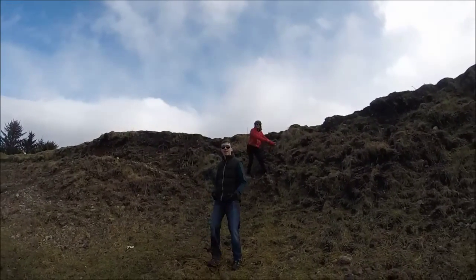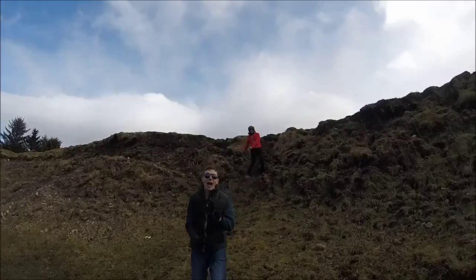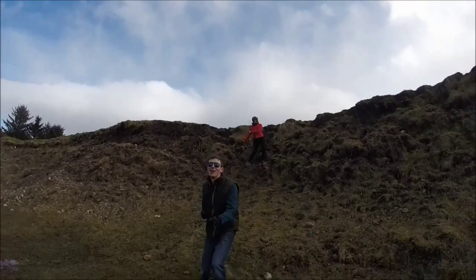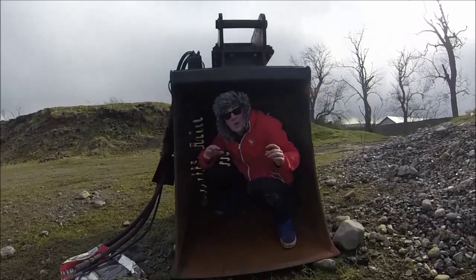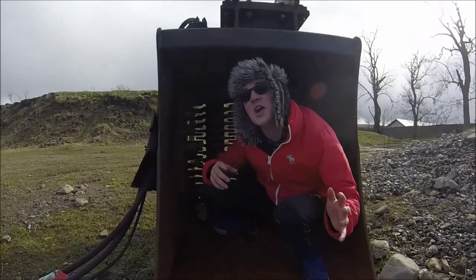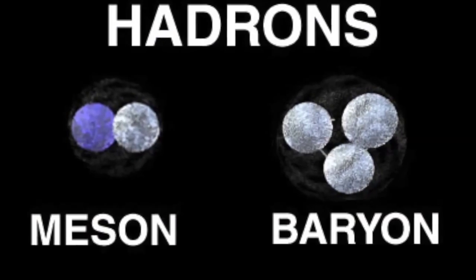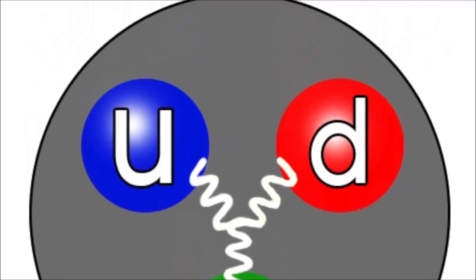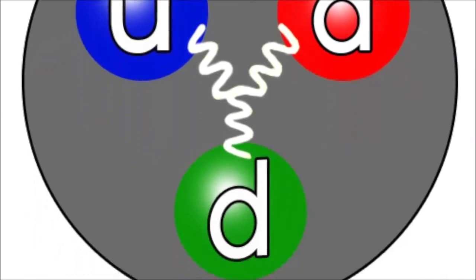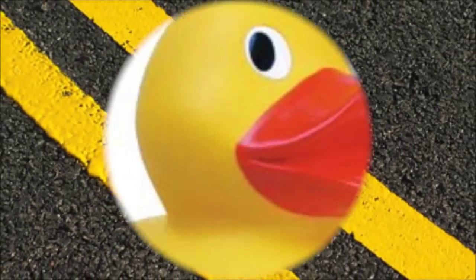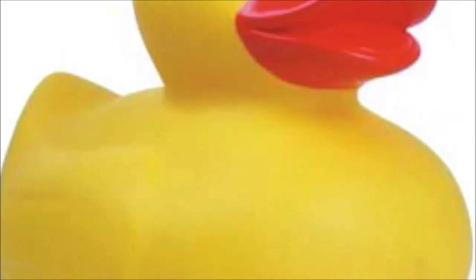There are two main different types of hadrons — mesons and baryons are where to stop. A meson contains a negative pion; now that's a fact that you can rely on. Here's a picture of a hadron, a picture of a quark, a picture of a place that you're not allowed to park. Here's a picture of a hadron, a picture of a quark, a picture of a place that you're not allowed to...